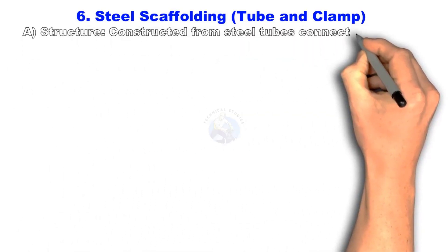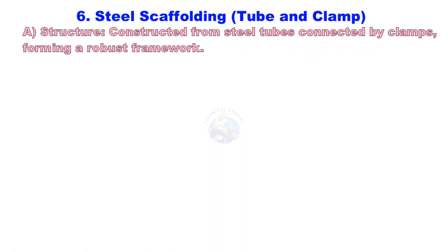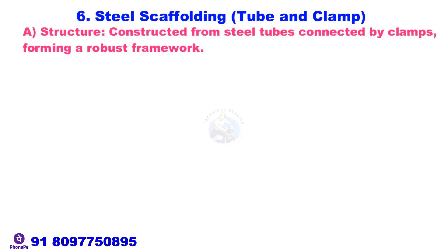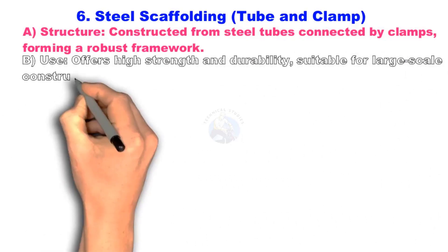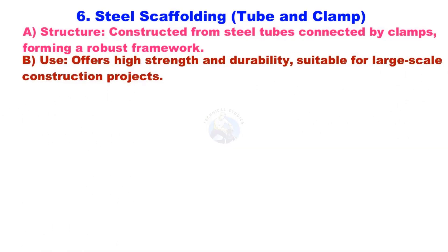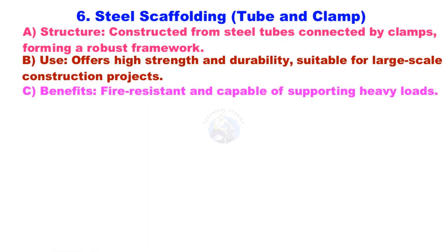Steel Scaffolding, also known as Tube and Clamp scaffolding. It is constructed from steel tubes connected by clamps, forming a robust framework. It offers high strength and durability, suitable for large-scale construction projects. Benefits include being fire-resistant and capable of supporting heavy loads.